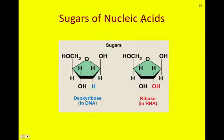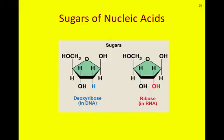The sugars that make up nucleic acids are either deoxyribose, as we see in DNA, or ribose, as we see in RNA. They are given two different names because they have two different sugars. Deoxyribose has one less hydroxyl group — so here you only see hydrogen — while in ribose you have two hydroxyl groups. That's the main structural difference, giving us the names ribose and deoxyribose.